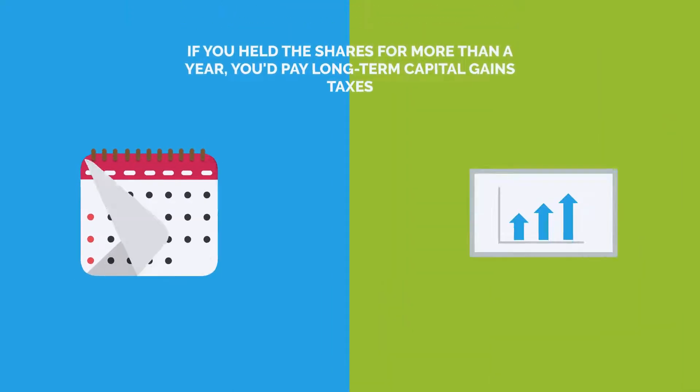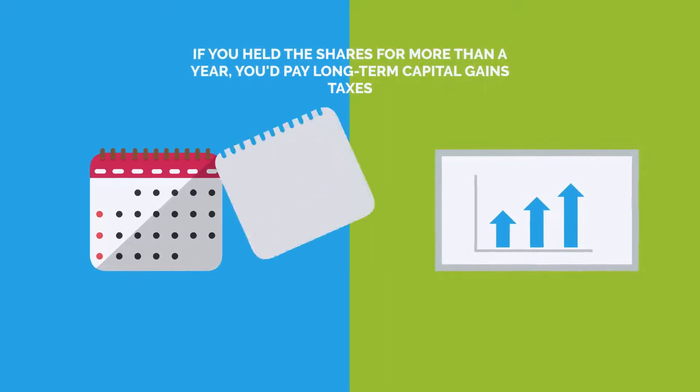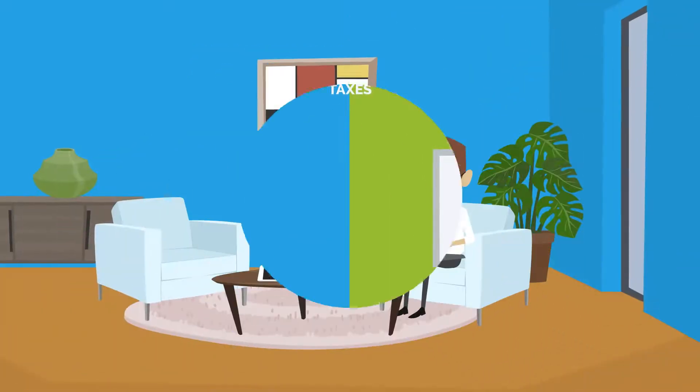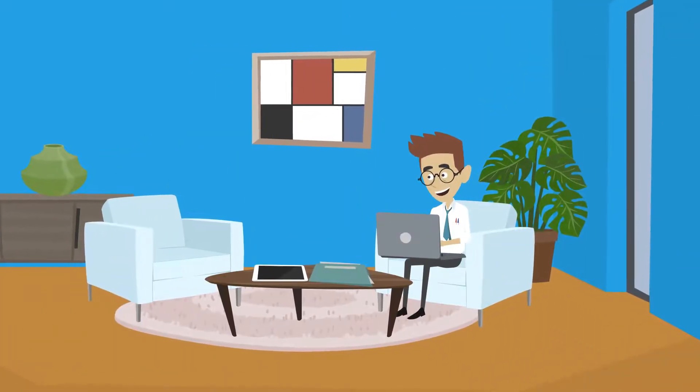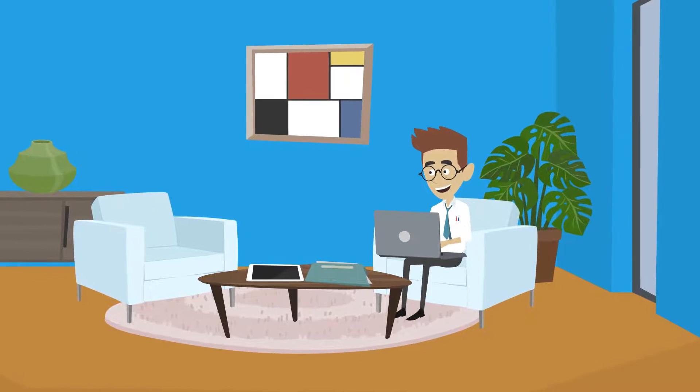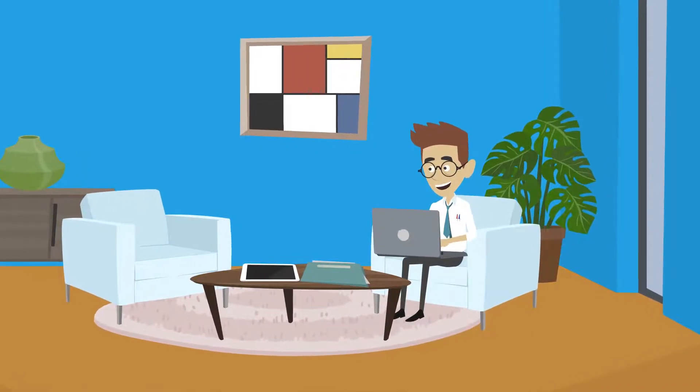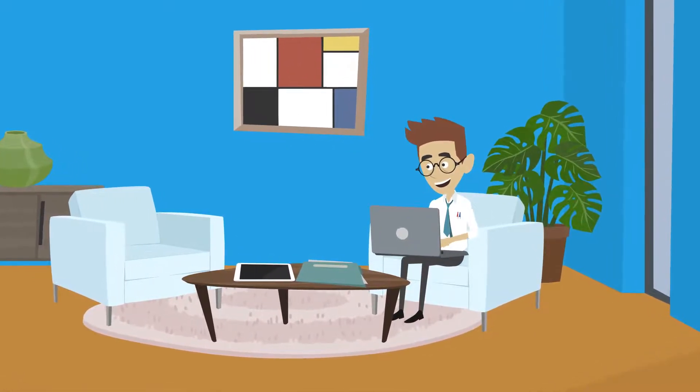If you held the shares for more than a year, you'd pay long-term capital gains taxes. By filing an 83B, you can start the holding period clock on the grant date, allowing earned capital gains to qualify for the lower capital gains tax rate.